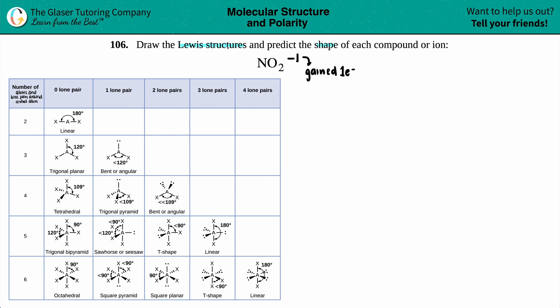Now we have to do two things here: draw the Lewis structure and predict the shape. The shape is mostly known as molecular geometry. That's where this chart comes in — here are all of your molecular geometries. Depending on if your teacher or professor is nice, they might give you a chart to help you out on tests and quizzes, but you might have to memorize them. So use flashcards, do whatever you got to do to memorize the differences between all of your molecular geometries.